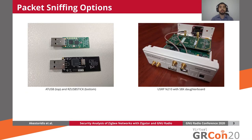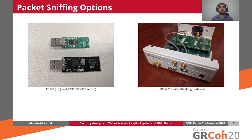Starting with the most fundamental functionality that we need for our testbed — that is the ability to capture Zigbee packets — generally speaking, we have two options. We can either use a dedicated IEEE 802.15.4 transceiver, or we can use a software-defined radio. In the case of a dedicated transceiver, we can use, for example, an ATUSB with its default firmware and tcpdump to capture Zigbee packets, or we can also use an RZ-USB stick with the Killer-B firmware and tools.